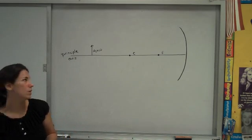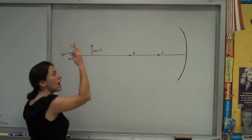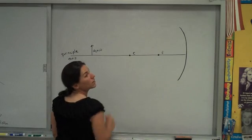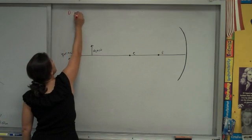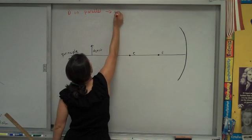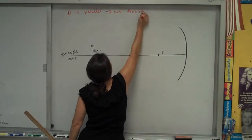The first rule says that any light that comes in parallel to this principal axis has to reflect off of the mirror and come out through this position F. So I'll just shorthand that as in parallel, out through F, after bouncing off the mirror, comes out through F.